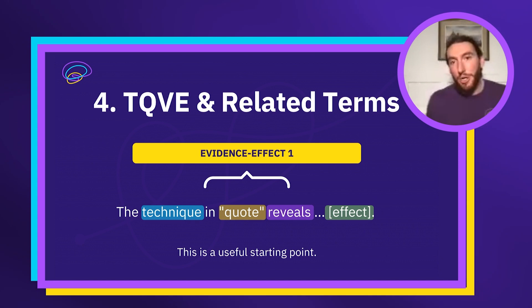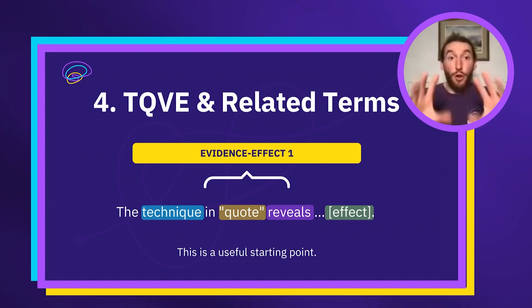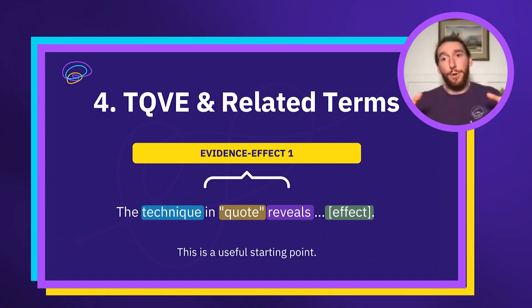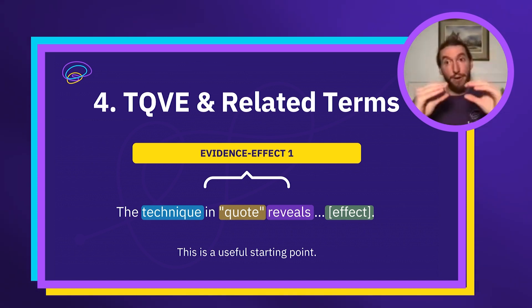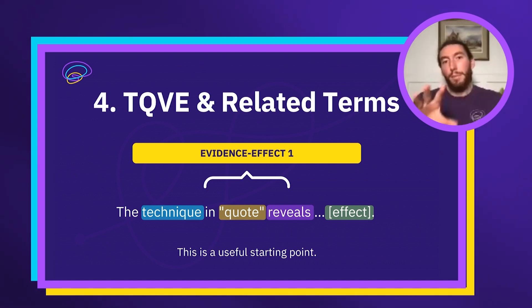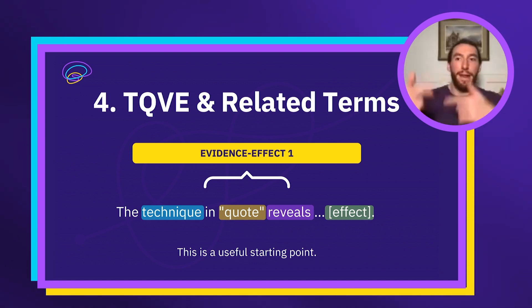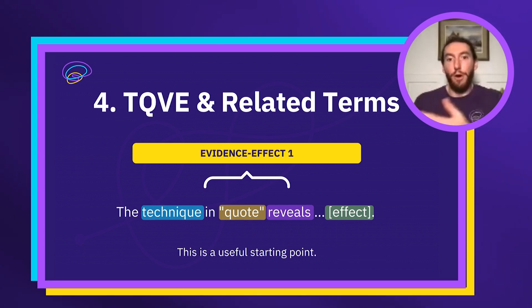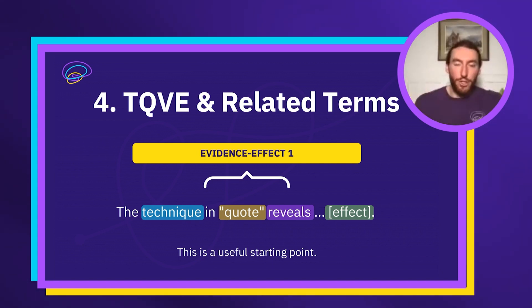Number four is TQVE and related terms. TQVE is a sentence structure — not for your introductions, not for your thesis statements, not for your topic sentences or link sentences, but for the sentences that sit inside the body paragraph. When we're looking at your body paragraphs in all of your essays and thinking about how you bring in the evidence, this is the foundational structure from which you can layer on your own flavor and play around with it. The basic structure is for a sentence of analysis, which is embedded in all of your body paragraphs.